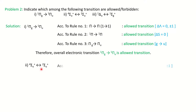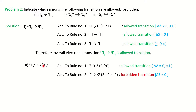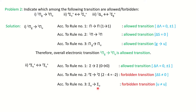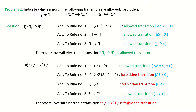Problem 2, transition (b): ⁴Σu⁺→²Σg⁺. Rule 1: Σ→Σ (0→0, Δλ=0) — allowed. Rule 2: multiplicity 4→2, so ΔS = ±1 (not 0) — forbidden. Rule 3: u→u — forbidden. Rule 4: Σ⁺→Σ⁺ — allowed. Since Rules 2 and 3 are violated, the overall transition is forbidden.